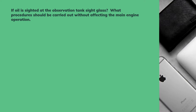If oil is sighted at the observation tank side glass — what procedures should be carried out without affecting the main engine operation? If there is oil sighted in the cascade or observation tank side glass, what are all the procedures and actions to be taken to overcome that without affecting main engine operation?